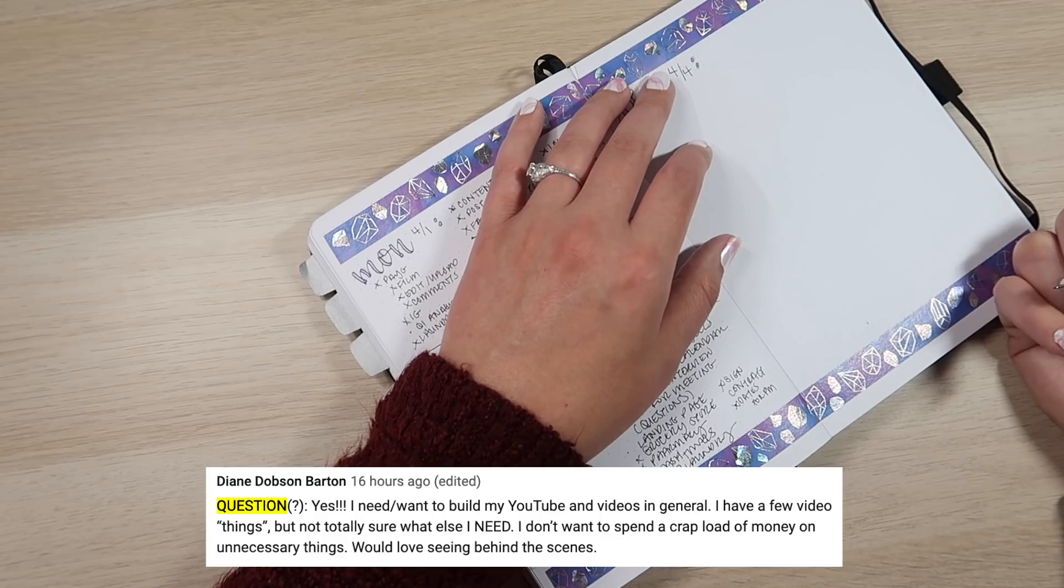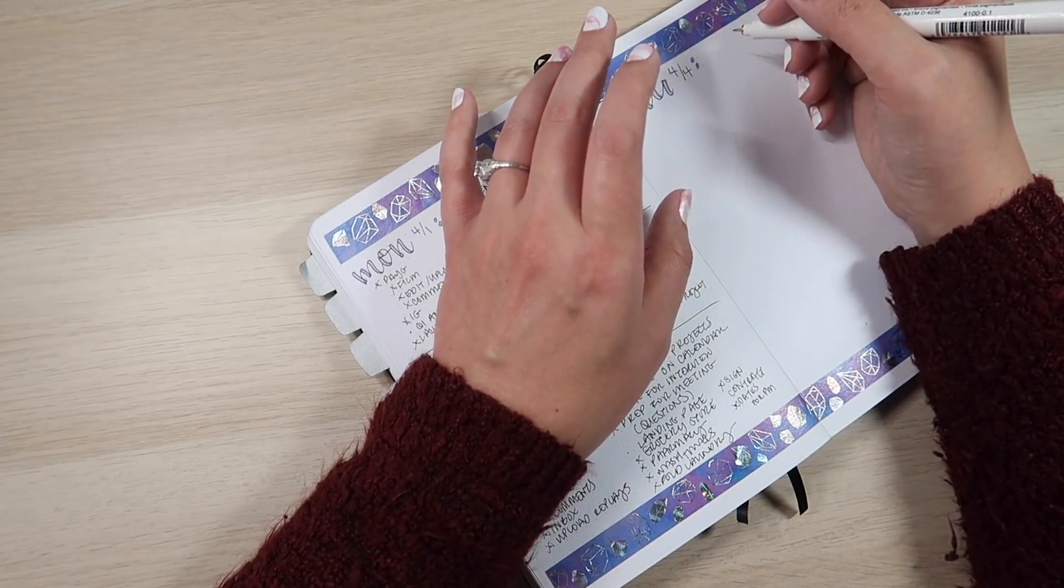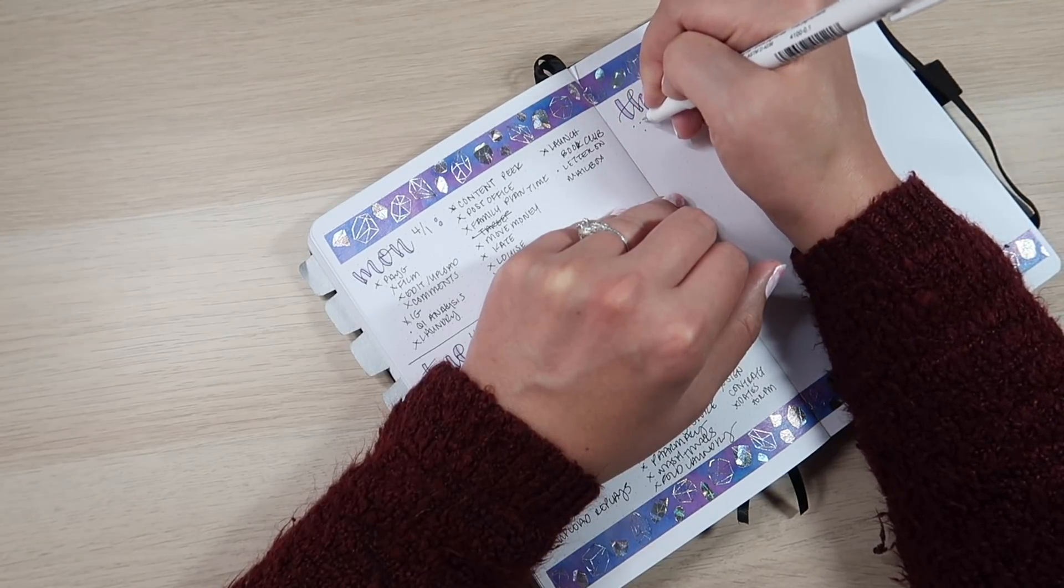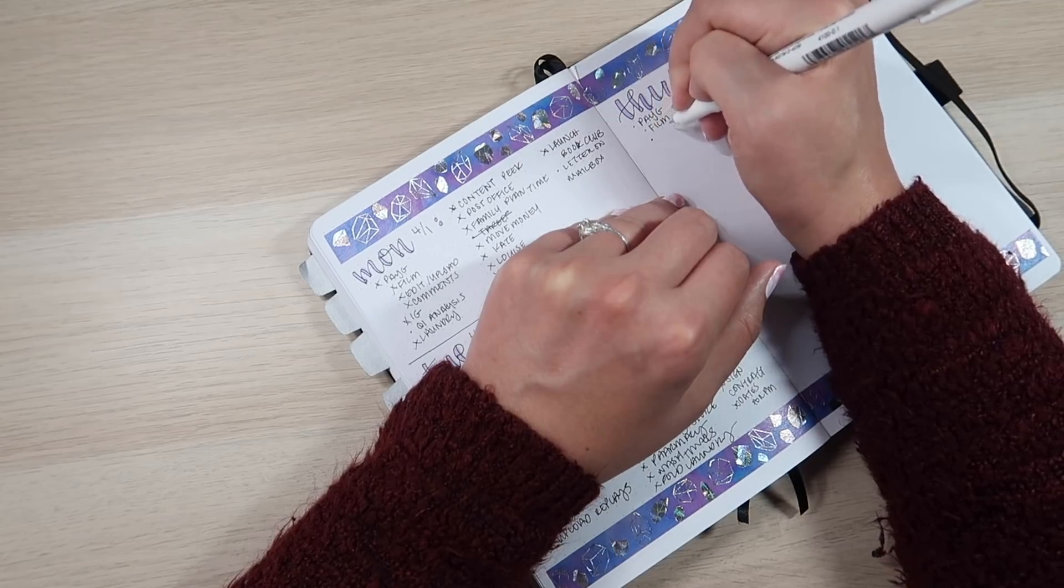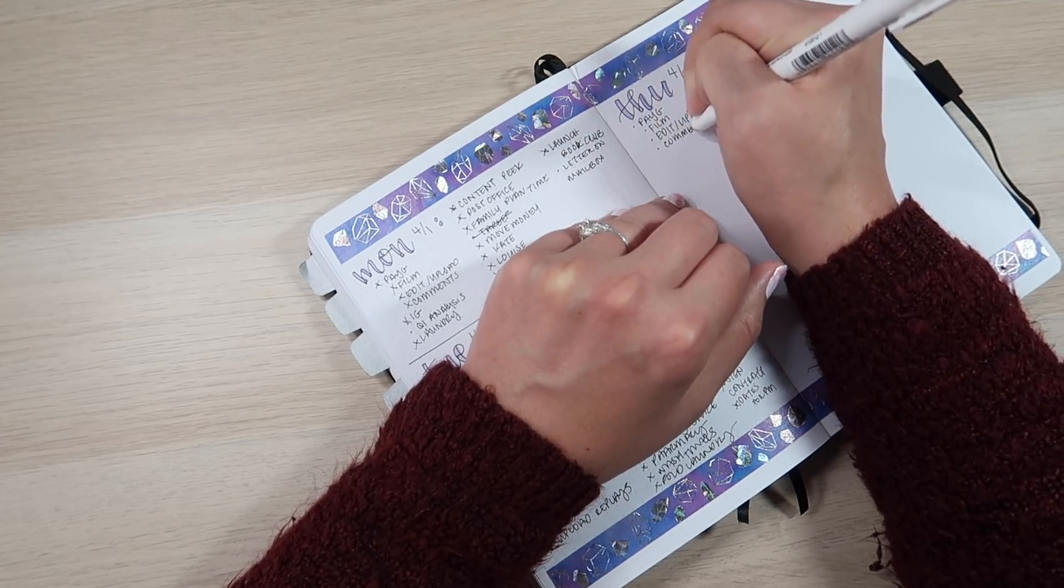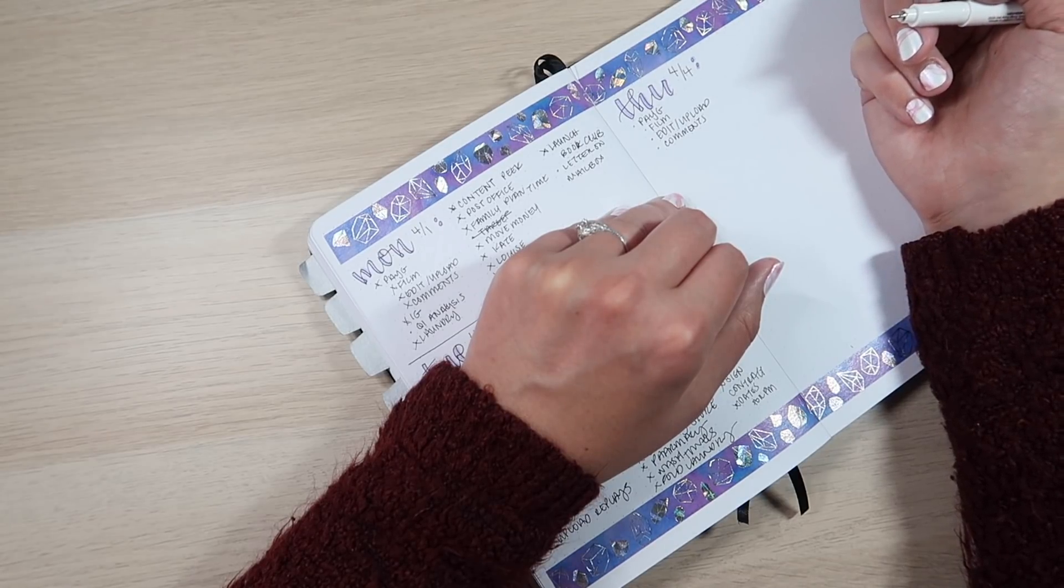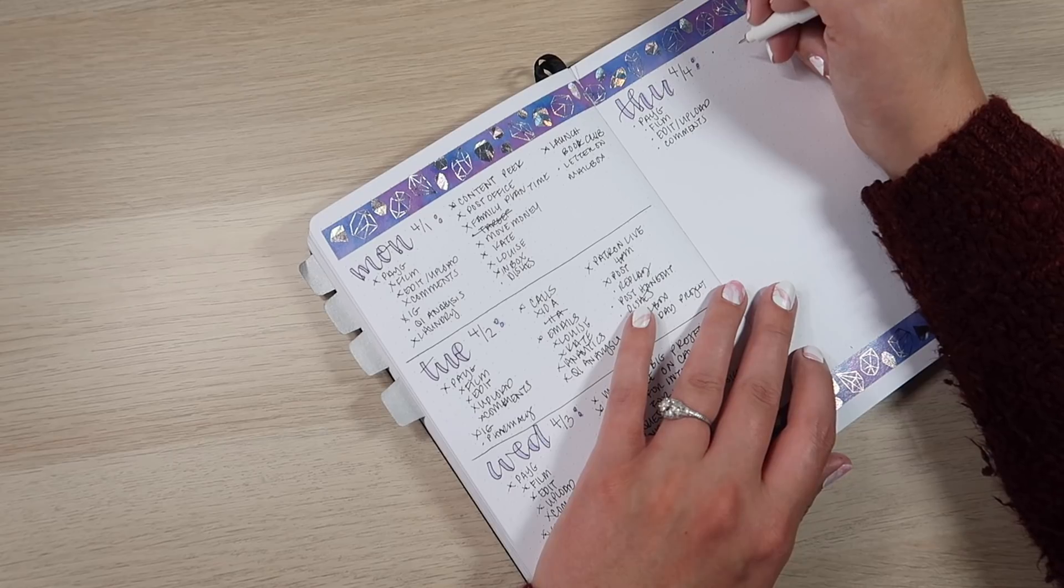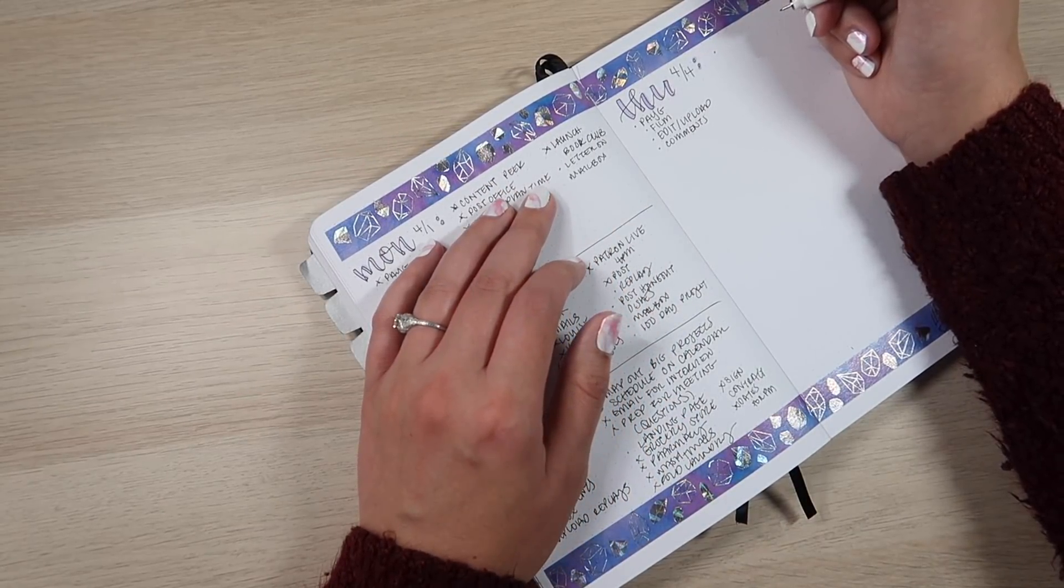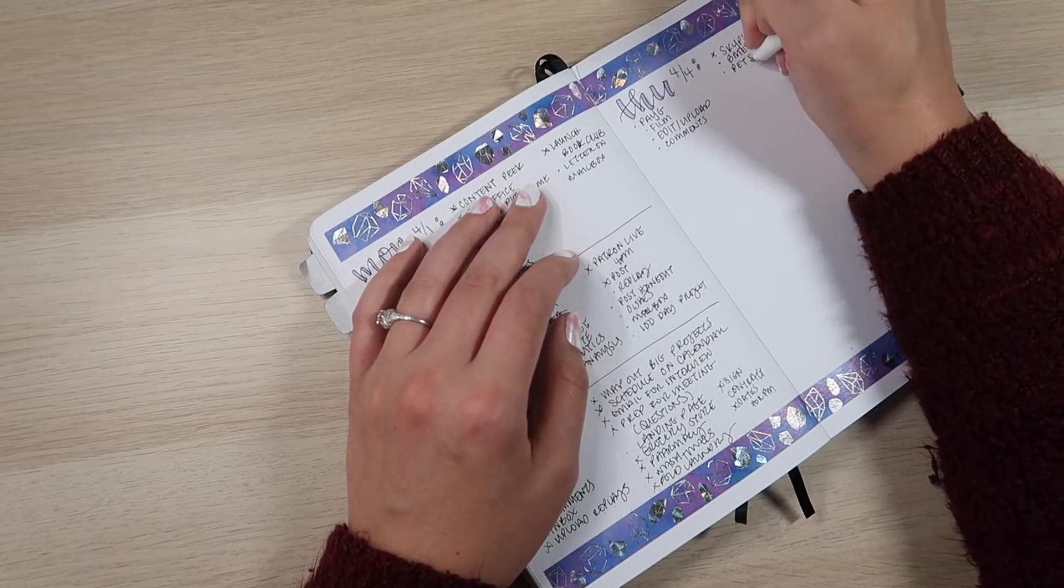The second YouTube question is from Diane who said, I want to build my YouTube and videos in general. I have a few video things, but not really sure what else I need. I don't want to spend a crap load of money on unnecessary things. What I have done this whole time is add as time goes on, especially when I started bringing in a little bit of money from AdSense. You don't need to go buy the best camera or the best tripod all at once. You start working with what you have. A smartphone is perfect. As you work, you will discover what more you need. Everything I've bought has been as it's come up. What is the thing where the upgrade would be the most bang for your buck? That's where you want to upgrade first.